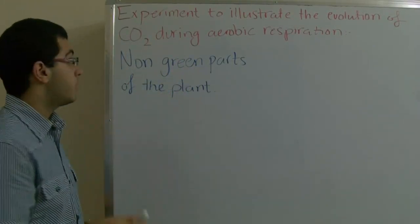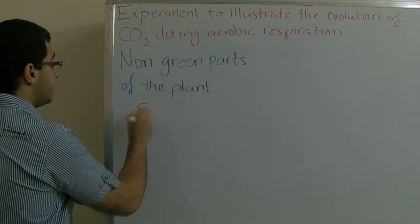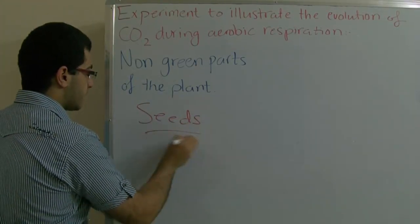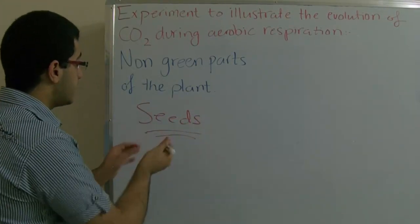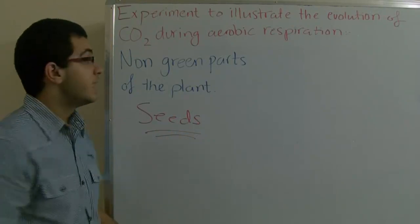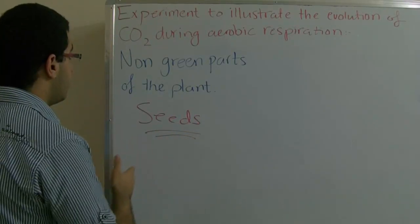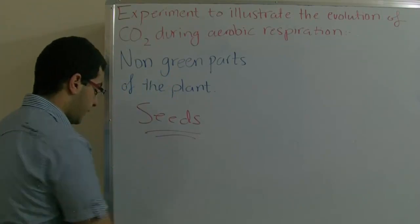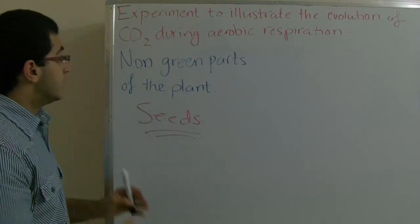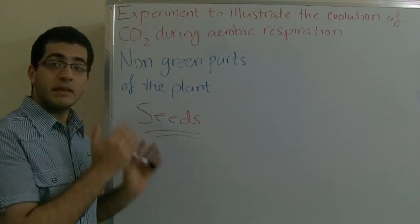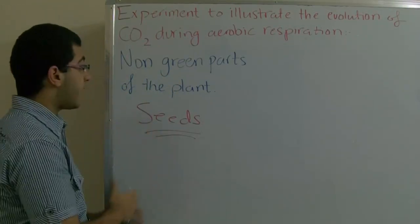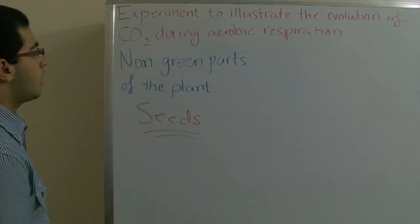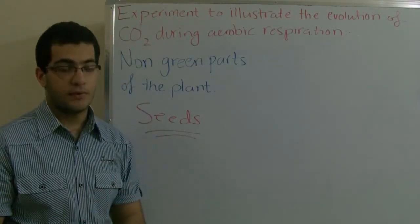By the non-green parts of the plant, I mean these seeds. The seeds do not contain any chlorophyll, so they are not considered a green part of the plant — they are a non-green part. And despite this fact, they produce carbon dioxide during aerobic respiration, and we will prove that.